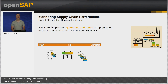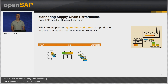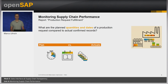What are the planned quantities and scheduled dates for a production request compared to actual confirmed records? The report Production Request Fulfillment provides the planned quantities and dates for a production request and the actual confirmed quantities and dates recorded. In the role of production controlling, you can analyze differences between what was planned and scheduled compared to the actuals confirmed, and work out improvements if needed.